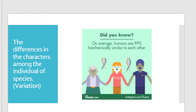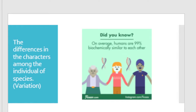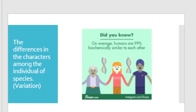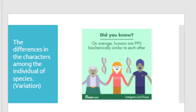This is why we can recognize one another. Because of variation, we can decide and form an image in our brain — that is our mother, that is our father, that is our sibling, grandmother, grandfather. This is just because of variation.